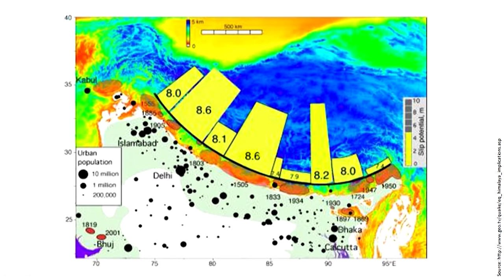For example, one area is estimated to have a potential of 8.6 magnitude earthquake. Another area, which is part of Uttarakhand and Himachal, has another big potential for creating large earthquakes. A large part of the Himalaya is a highly seismically active region due to the movement of the Indian plate going below the Eurasian plate, causing many earthquakes regularly.